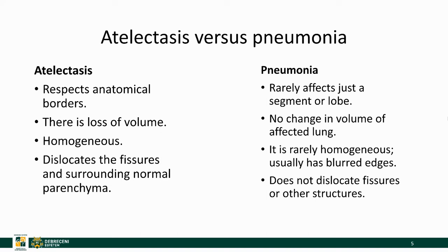We need to differentiate between an atelectasis and a pneumonia. An atelectasis respects anatomical borders like fissures, and there is loss of volume. It will appear homogeneous and will dislocate fissures and surrounding normal parenchyma. A pneumonia, on the other hand, rarely affects just one segment or lobe. We usually won't see any change in volume. A pneumonia is rarely homogeneous — it usually has blurred edges and doesn't dislocate fissures or other normal anatomical structures.